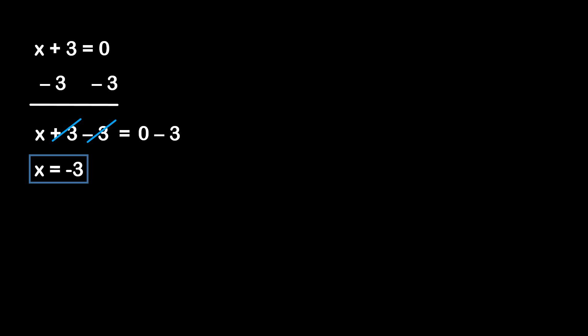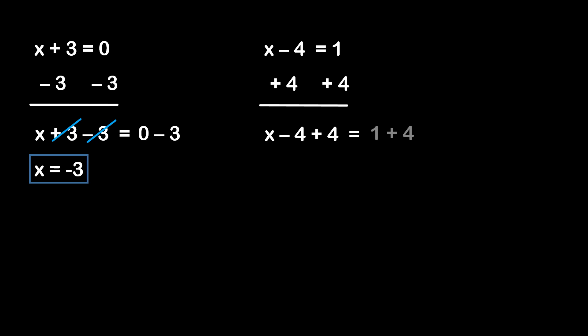What if we were given x minus 4 is equal to 1? It's the same idea. How do we get rid of that negative 4 so that x is on its own? We want to add 4 to that side, because we know that negative 4 plus 4 is 0. But whatever we do to one side, we have to do to the other side, so we're going to add 4 to the right-hand side as well. That leaves us with x minus 4 plus 4 is equal to 1 plus 4. Negative 4 plus 4 is equal to 0, so these cancel out, and we're left with x is equal to 5.